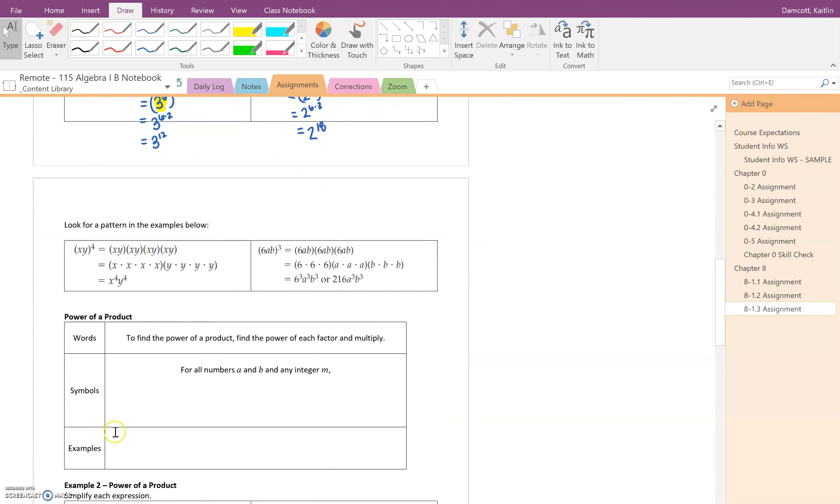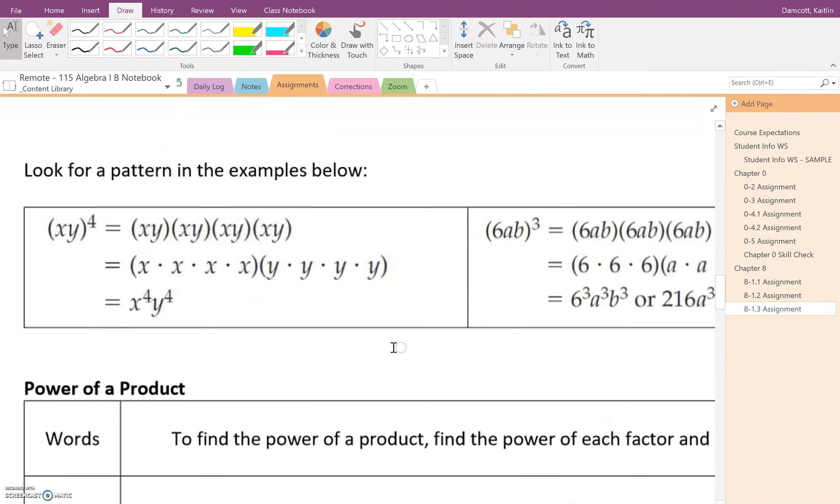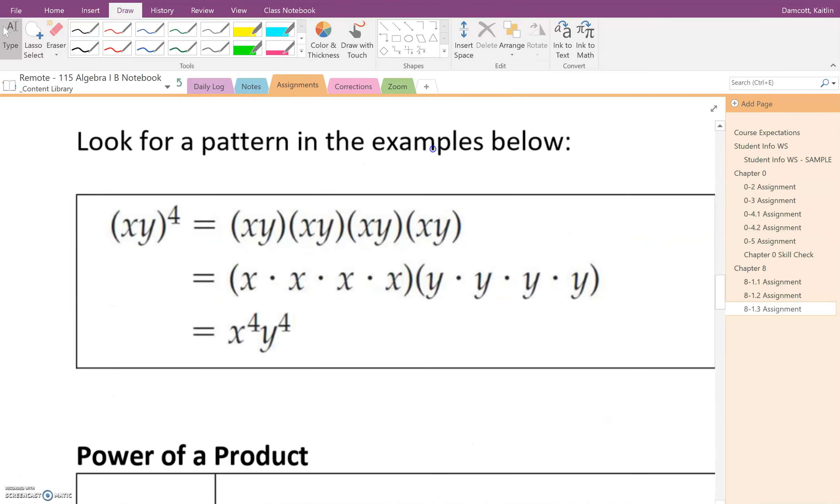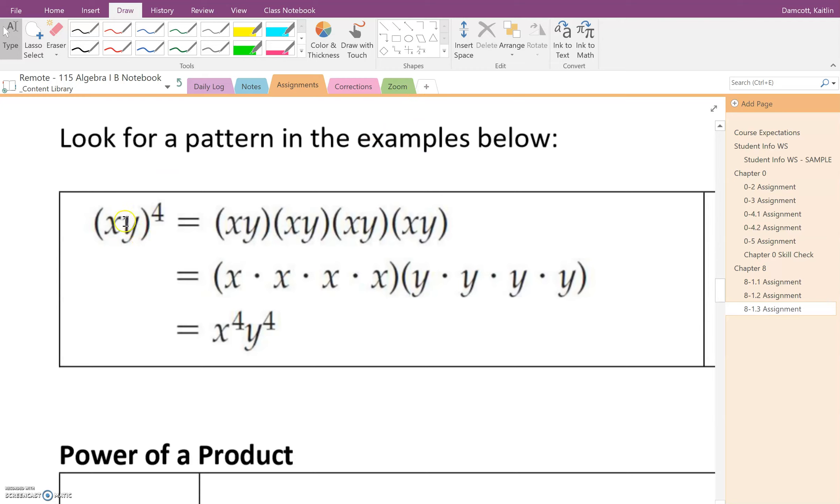Now in the next example, we're looking for a pattern. So if you look in this example here, we have x times y, and we're taking this and raising it to the fourth power. So if we think about what the definition of a power is, we need four factors of xy multiplied together. So we have xy times xy times xy times xy.